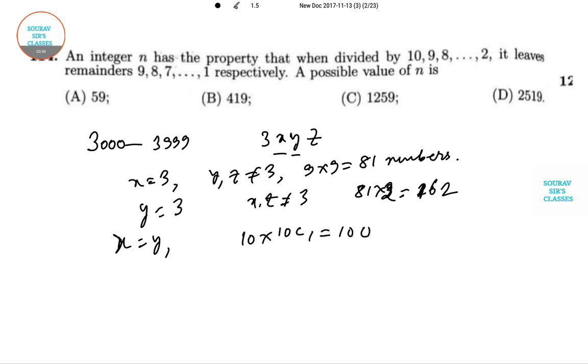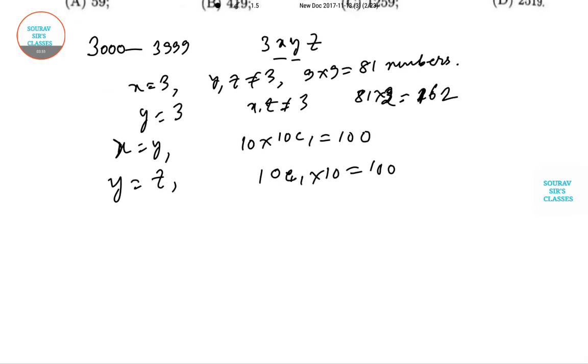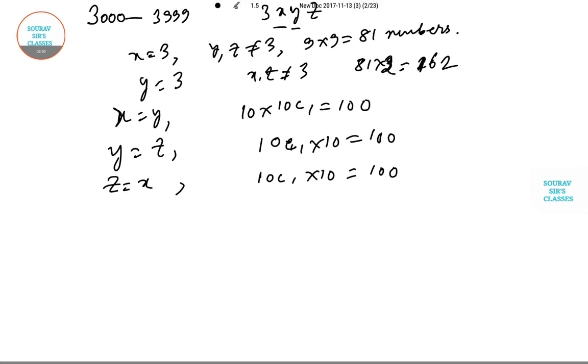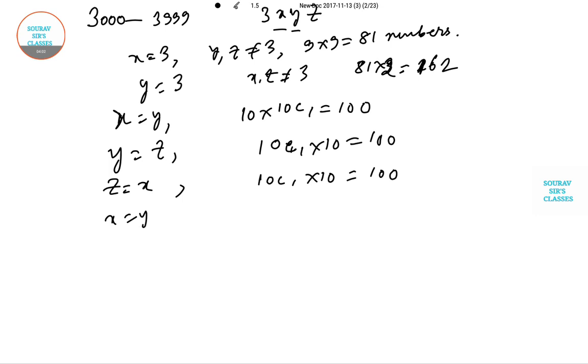Now if X equals Y, there are 10 choose 1 possibilities, that is 100 numbers. Next is Y equals Z, again 10 choose 1 times 10, that is 100. And the third, Z equals X, in that way also 10 choose 1 times 10, which is 100.